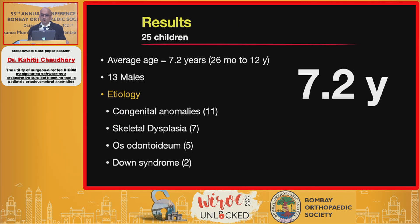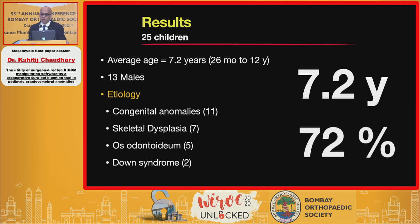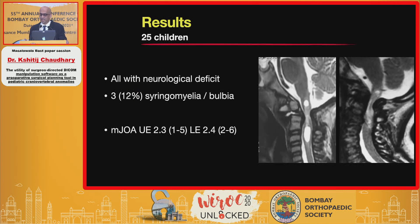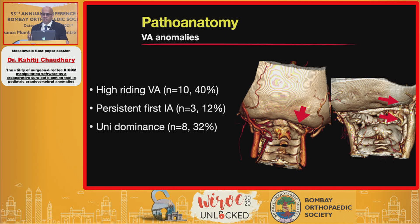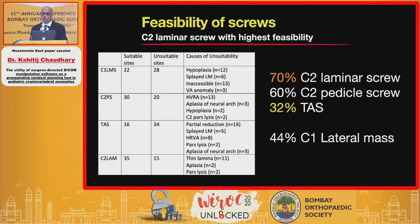The cohort of 25 children had an average age of 7.2 years, and about 72 percent had congenital or dysplastic anomalies. All patients presented with neurological deficit. The commonest morphological anomaly was C2-C3 fusion, followed by basilar invagination. Forty percent of patients had abnormal vertebral artery variations. Looking at screw suitability, the C2 laminar screw had the highest percentage of acceptable sites — approximately 70 percent.